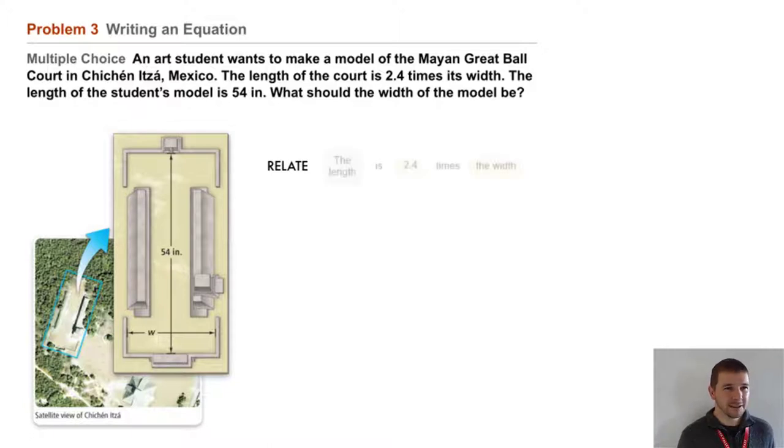Well first we'll relate the quantities. The length is 2.4 times the width. Then we'll define variables. Remember when we're setting up equations to model situations, one of the first things we need to do is establish or define variables. We can let W equal the width of the model.